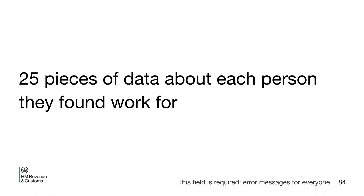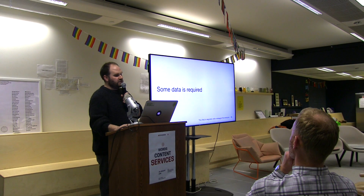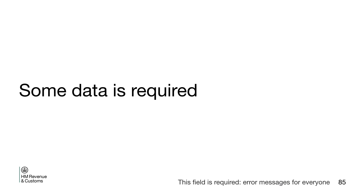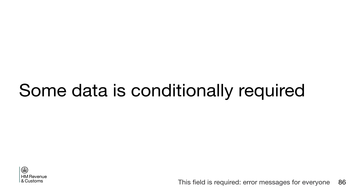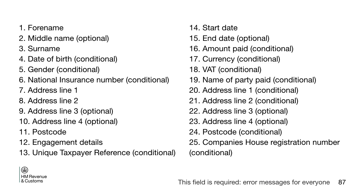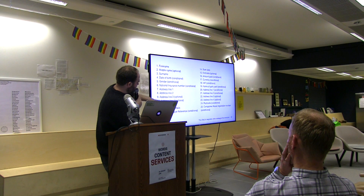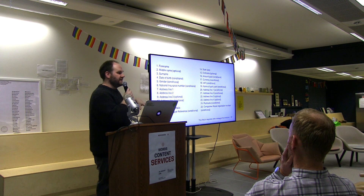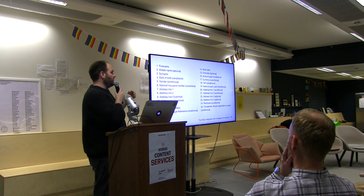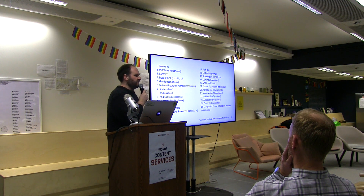They had to give about 20, possibly 25 pieces of data about each person they found work for. Some of it was required, but more importantly some of it was conditionally required. You had to have a phone number, name and surname, but if you put a national insurance number in, you didn't need to tell us the date of birth or gender. But if you didn't have a national insurance number, you did need to give us them. All of these conditional things meant that hardly anybody could do this first time.